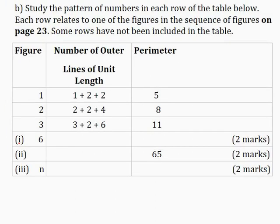Part B: study the pattern of numbers in each row of the table below. Each row relates to one of the figures in the sequence of figures on page 23. Some rows have not been included in the table. In this table they give us an arithmetic sequence with a simple number pattern that can be used to derive a formula for the perimeter.